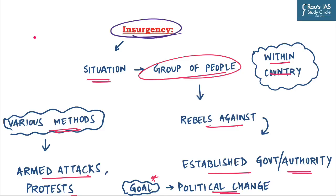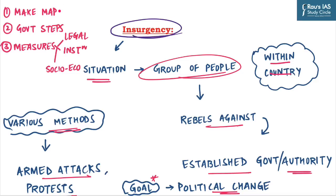Before discussing reasons for insurgency in North East, here is a piece of advice. Whenever you come across a question related to internal security, try to incorporate a map showing the disputed region, government steps regarding it, and measures categorized under three headings: legal, institutional, and socio-economic. This will give your answer better structure and help you fetch more marks for the same content.